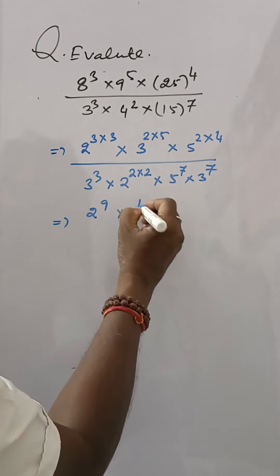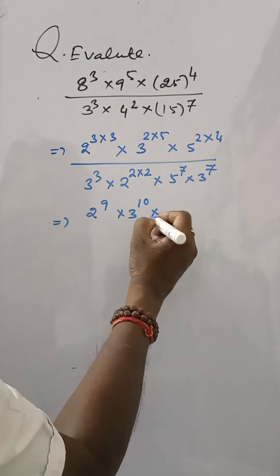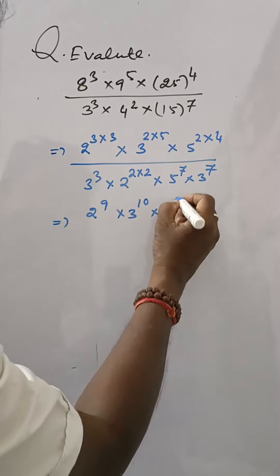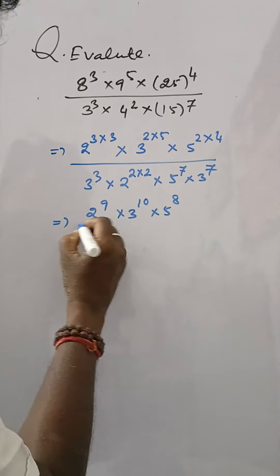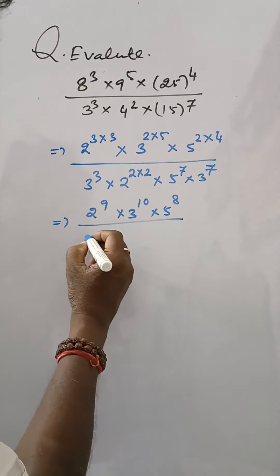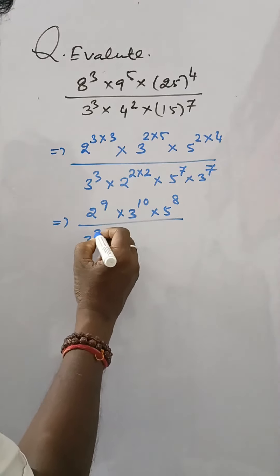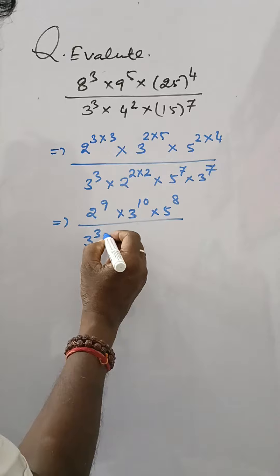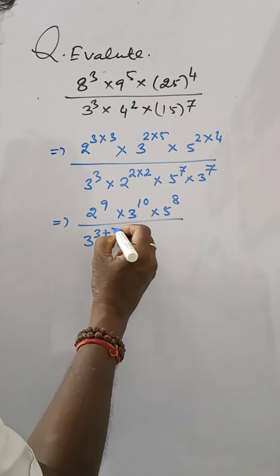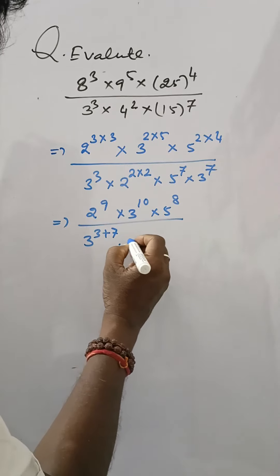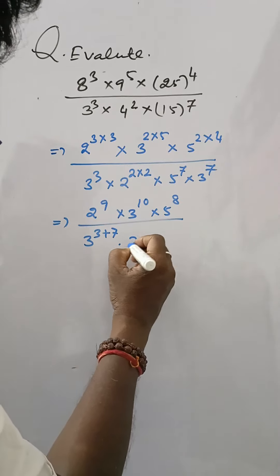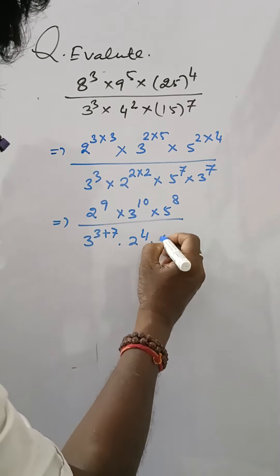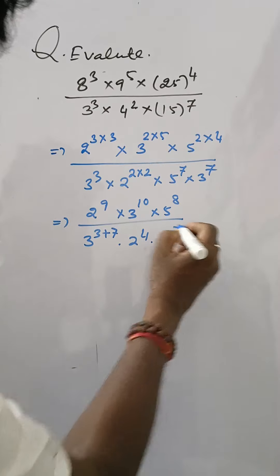Now this gives 2 to the power 9 into 3 to the power 10 into 5 to the power 8, divided by 3 to the power 3 plus 7 into 2 to the power 4 into 5 to the power 7.